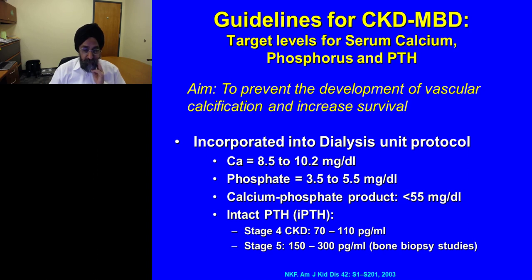The guidelines for CKD bone density define target levels for serum calcium, phosphorus, and PTH in patients with renal disease. Calcium should be between 8.5 and 10.2 mg/dL — the same as the reference range for healthy people. Phosphate should be 3.5 to 5.5, and the calcium-phosphate product should be less than 55. For intact PTH, normal values go up to 50 pg/mL, but in stage 4–5 CKD patients, PTH can be as high as 110–300 pg/mL and may still be considered normal.